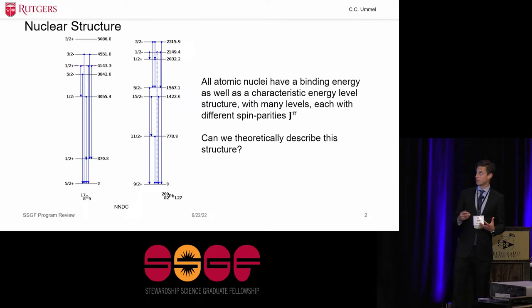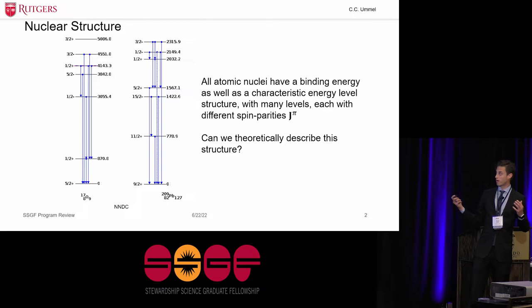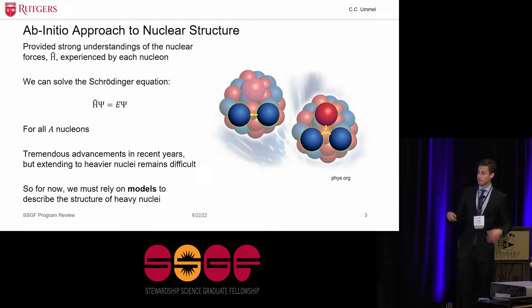So to get right into it, all atomic nuclei have a binding energy that holds the protons and neutrons together, and they have a characteristic energy level structure. So for example, I've shown here oxygen-17 and lead-209, which are very different in terms of mass, but they have one very specific thing in common. And as you can see here, they have an energy structure. For example, oxygen-17 has a ground state here at exactly 0 keV in energy, and each of these levels has a characteristic energy and spin. The spin of the oxygen-17 ground state is five halves, and it has a positive parity, and it has a first excited state at 870.8 keV with a spin parity of one halves plus.